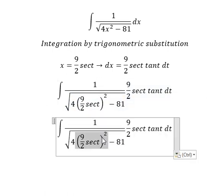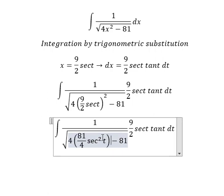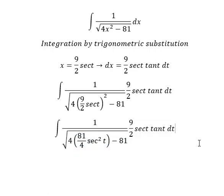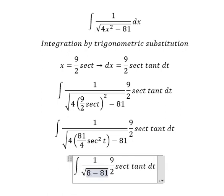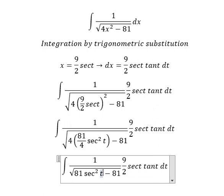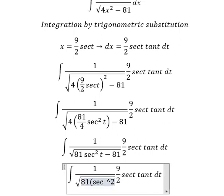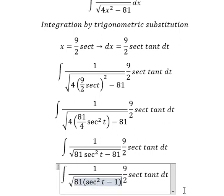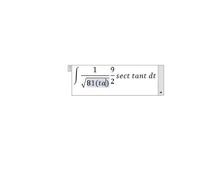So this one we have 81/4 secant squared t. Number 4 and number 4 we cancel. So 81, we can do factorization. This one is tan squared t in here.